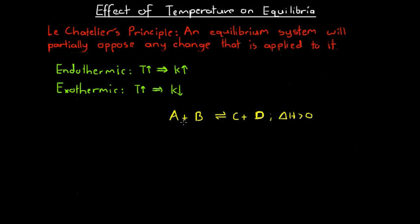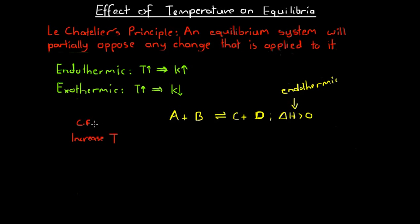We're going to look at how we can do that via a general endothermic reaction. Here we've got a general reaction — it doesn't matter what the reactants and products are, only that it is endothermic. Let's say I've got a container with all my substances A, B, C and D at equilibrium. The concentration fraction is equal to the equilibrium constant. Then I increase the temperature, and what that does is increase the equilibrium constant.